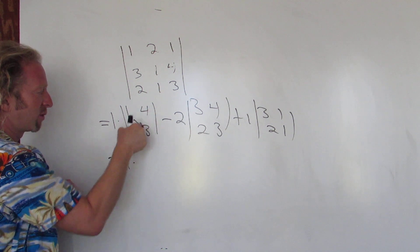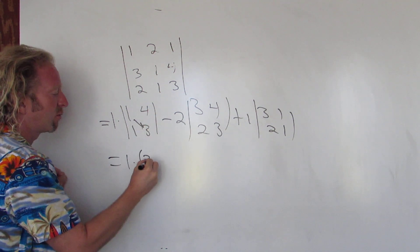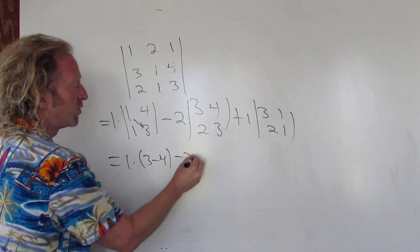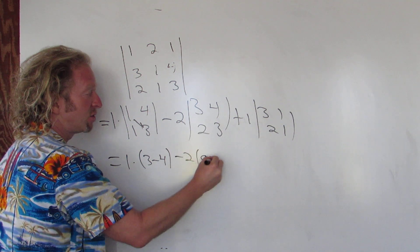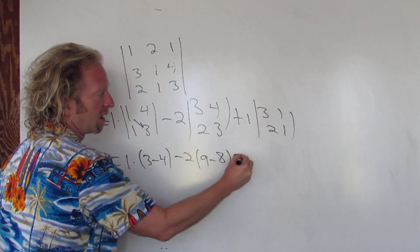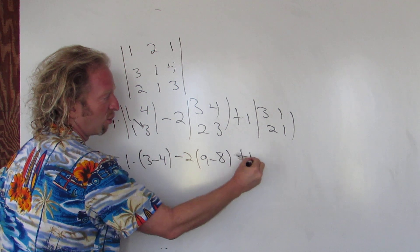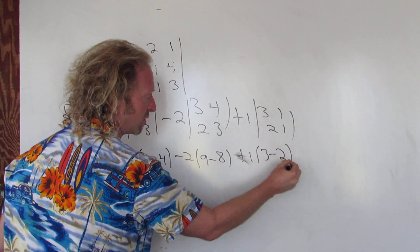And this is 1 times—then you just do 1 times 3 minus 4 times 1. 1 times 3 is 3, 4 times 1 is 4. Minus 2: 3 times 3 is 9, 2 times 4 is 8. 1, whoops, 1, 1, 1, 3 times 1 is 3 minus 1 times 2 is 2.